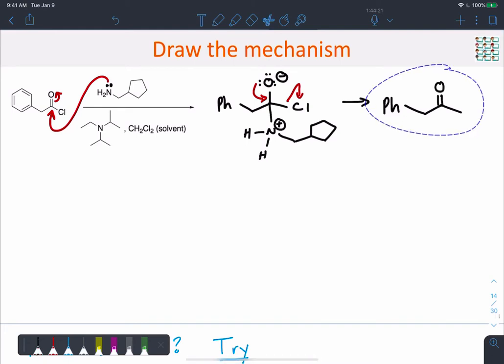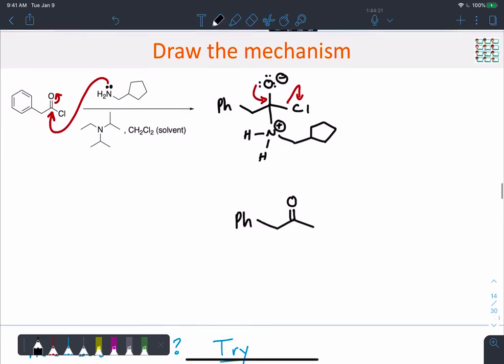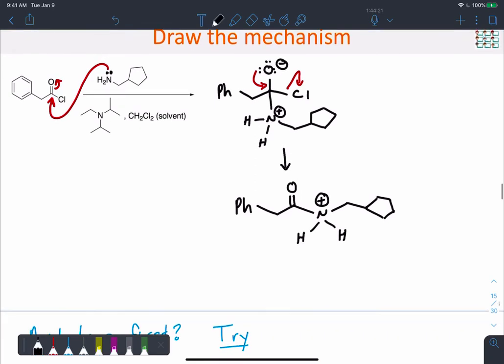And I'm going to run out of room so I'm just going to move this over. So we're also known as Hunig's base, a strong non-nucleophilic base, really useful for these reactions to deprotonate, and that'll get us to the final product.